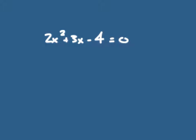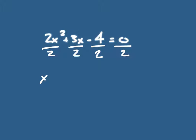For this next example, first things first: in order to complete the square we have to have a leading coefficient of 1. So the first thing I'm going to do is divide everything by the leading coefficient. Then I have x squared plus three-halves x minus 2 equals 0. Now I can complete the square.